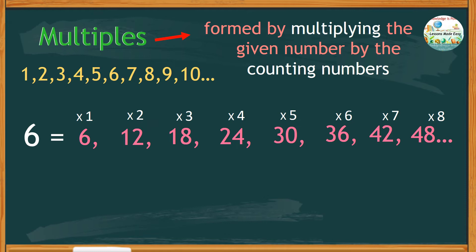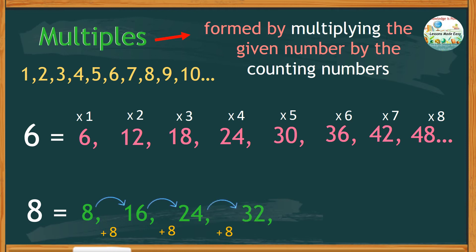For example, if we are to find the multiples of 8, we can start from 8, then repeatedly add by 8 to get the next multiple. That gives us 16, plus another 8 is 24, plus 8 is 32, plus 8 is 40, plus 8 is 48, plus 8 is 56, and so on. Looking at these examples, we can conclude that multiples of any number are infinite or endless.